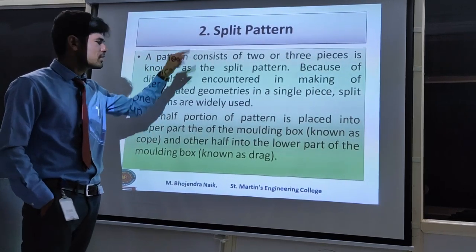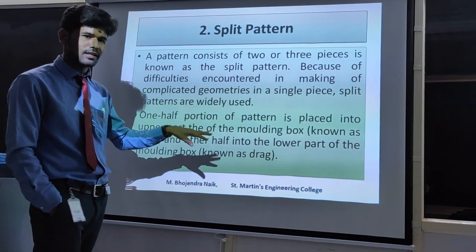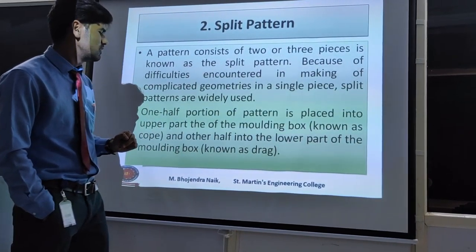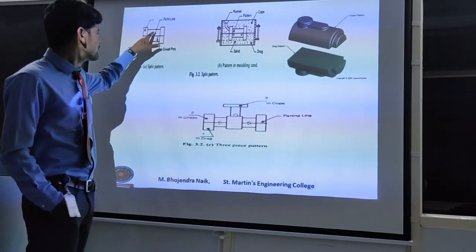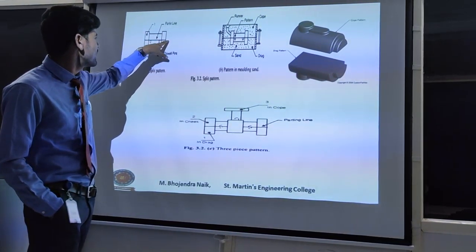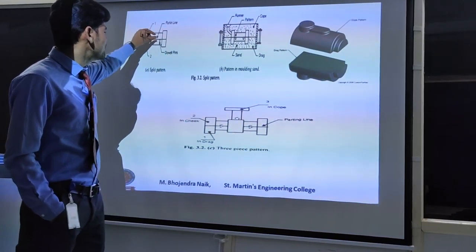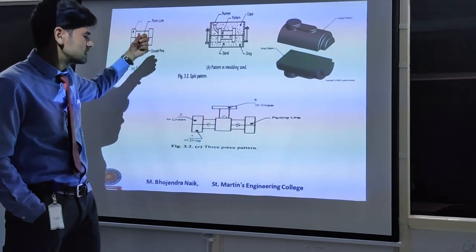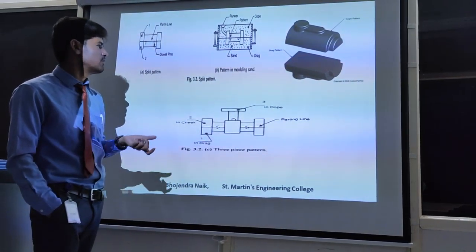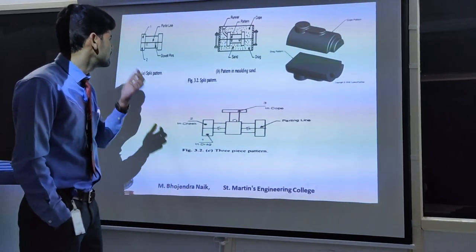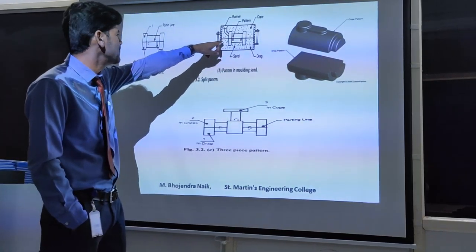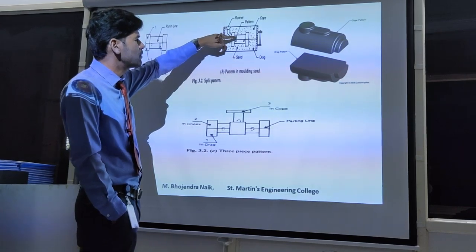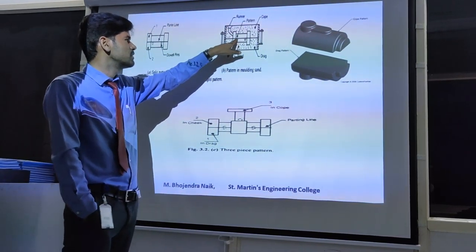In the case of a split piece pattern, half the portion is placed in the bottom box — the drag box — and the other half is placed in the top part — the cope box. The two pieces are joined by a line called the parting line, and these two pieces are joined by pins called dowel pins. While withdrawing a solid piece pattern it is very difficult — it can disrupt the entire moulding set — so we split it into two parts and join them with the help of dowel pins.